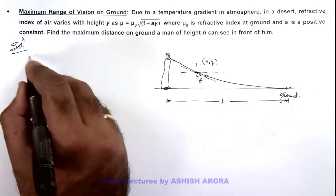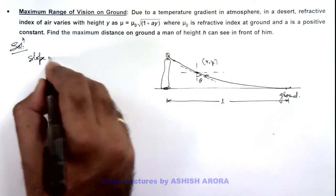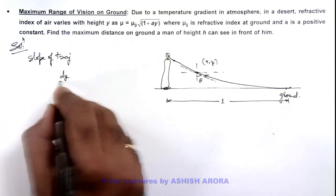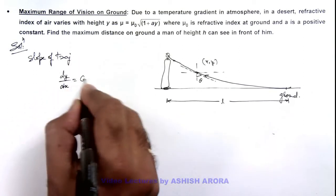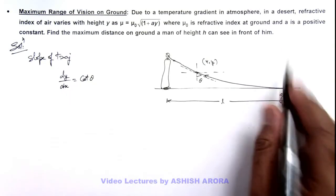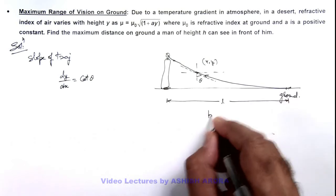Again we can write the slope of trajectory. This can be written as dy/dx = cot θ. And here, as on ground the refractive index is μ₀, we can write by Snell's law...